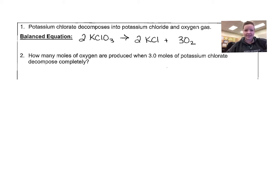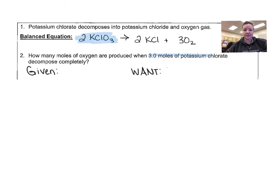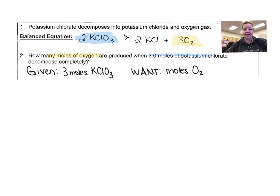So the first question says: how many moles of oxygen are produced when three moles of potassium chlorate decompose completely? The first step is to identify what you're given and identify those materials in the balanced equation. We have three moles of potassium chlorate — identify that first in the chemical equation. We want to find how many moles of oxygen there are, so identify that in the chemical equation. Identify what you're given, identify what you want to find, and from there you can build a conversion factor.